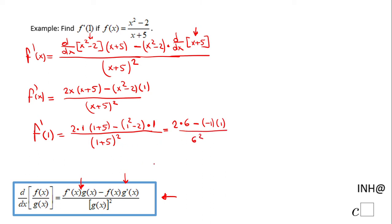We can do 2 more steps: 2 times 6 is 12, negative 1 times 1 is negative 1. The negative becomes positive, positive 1, over 6 squared, that is 36. So we have 13 over 36.